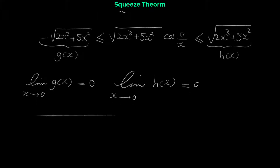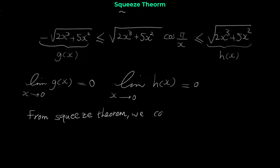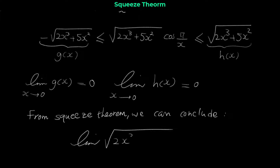Now you have to write this concluding sentence, otherwise your solution is not complete. From the squeeze theorem — or sandwich theorem — we can conclude that the limit of the middle function, the limit of √(2x³ + 5x²) · cos(π/x) when x approaches 0, is also 0.